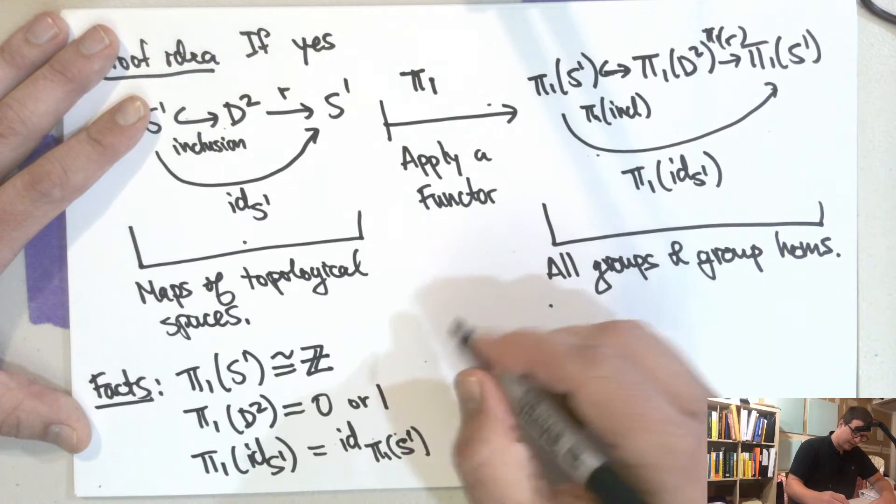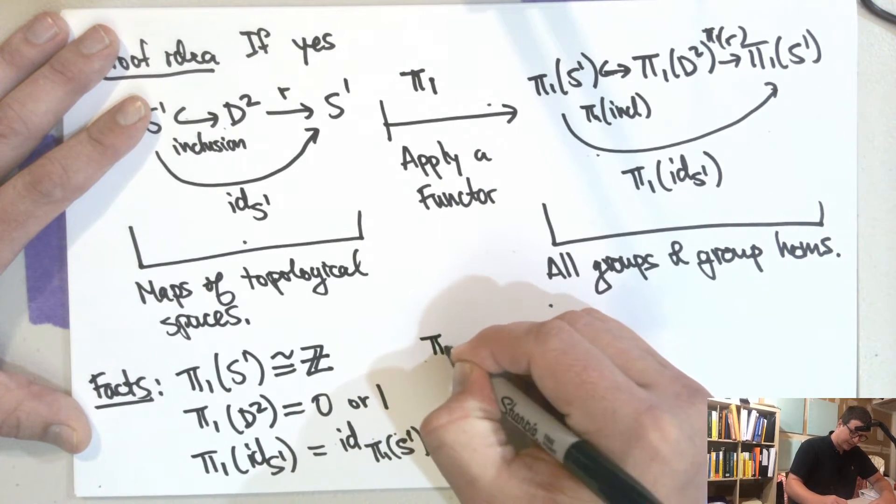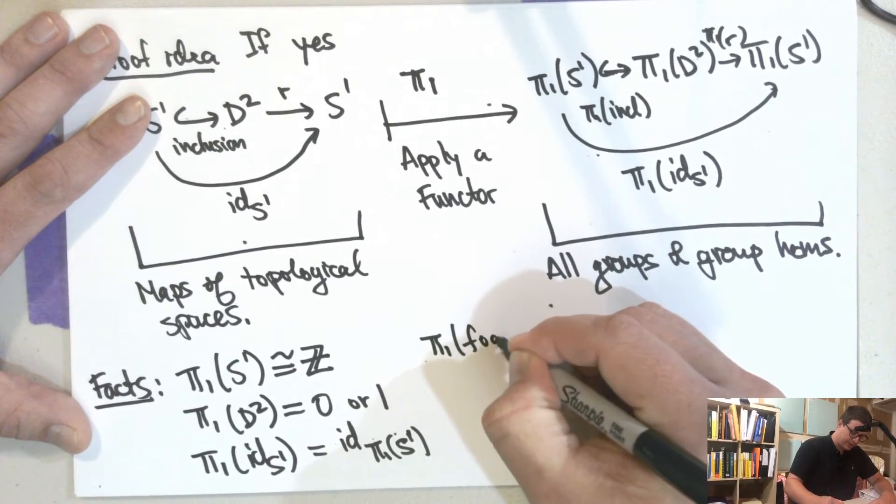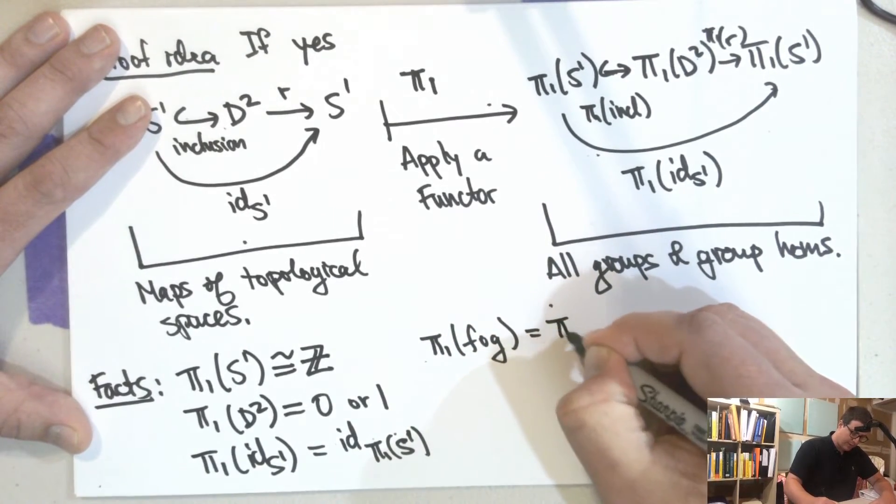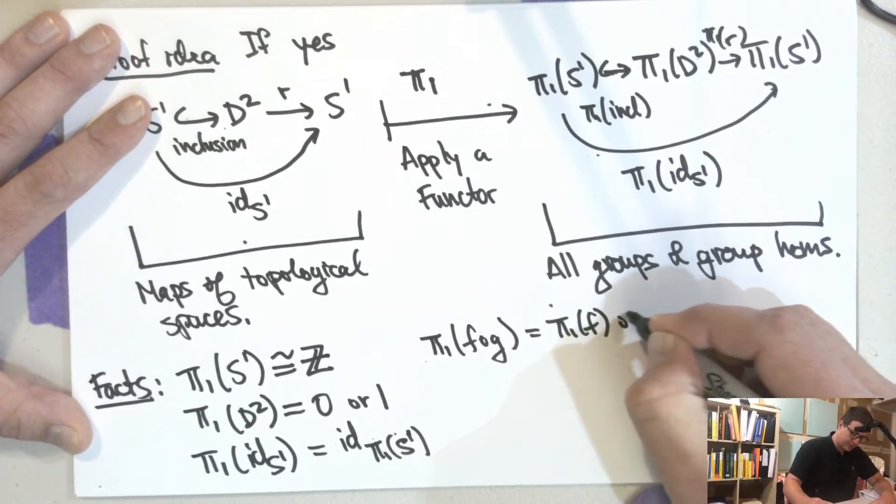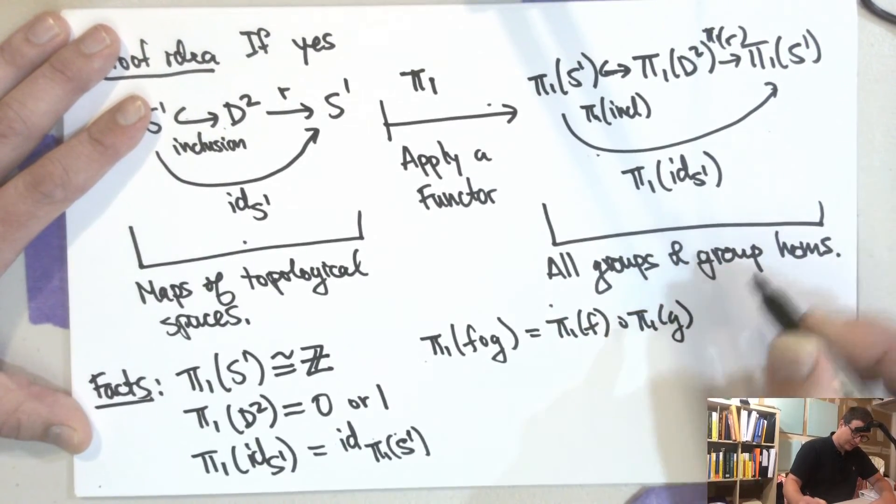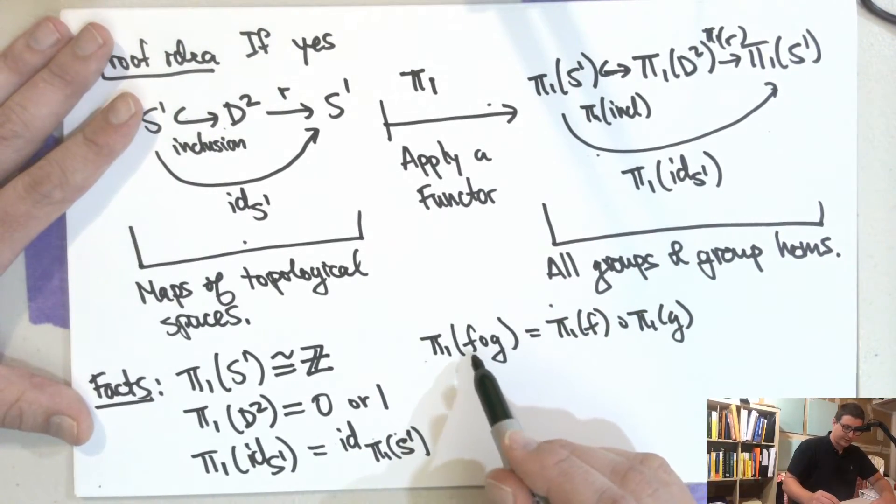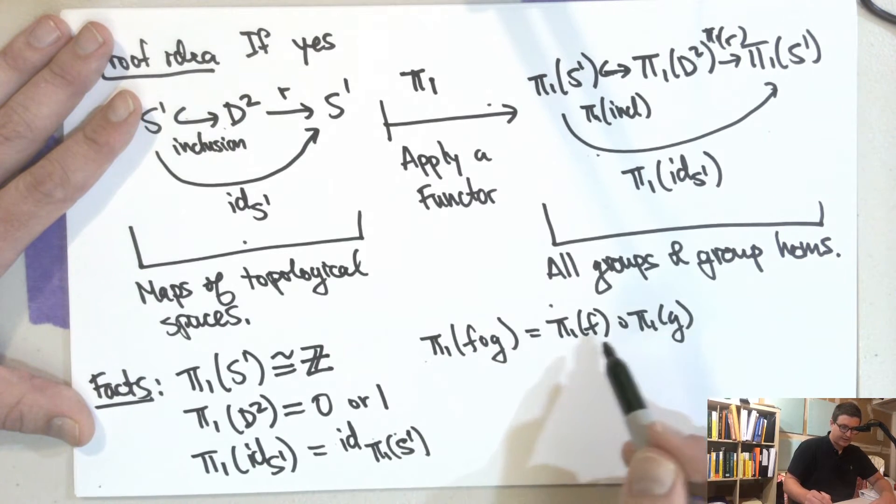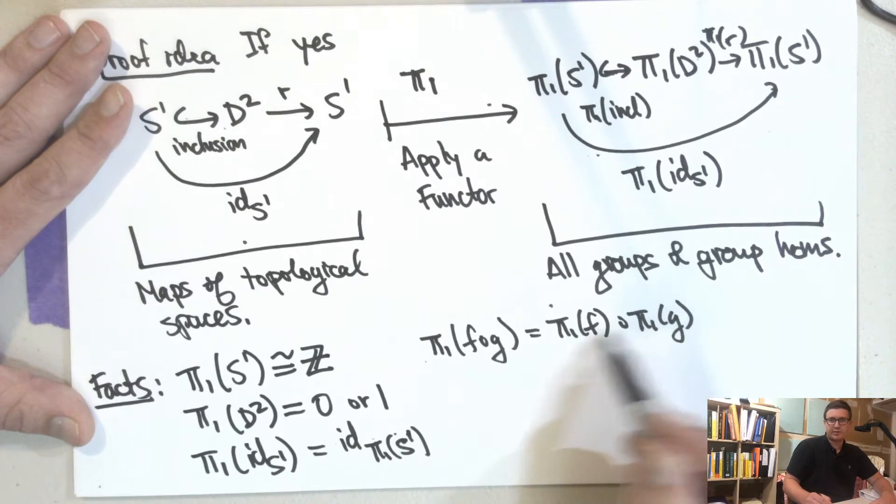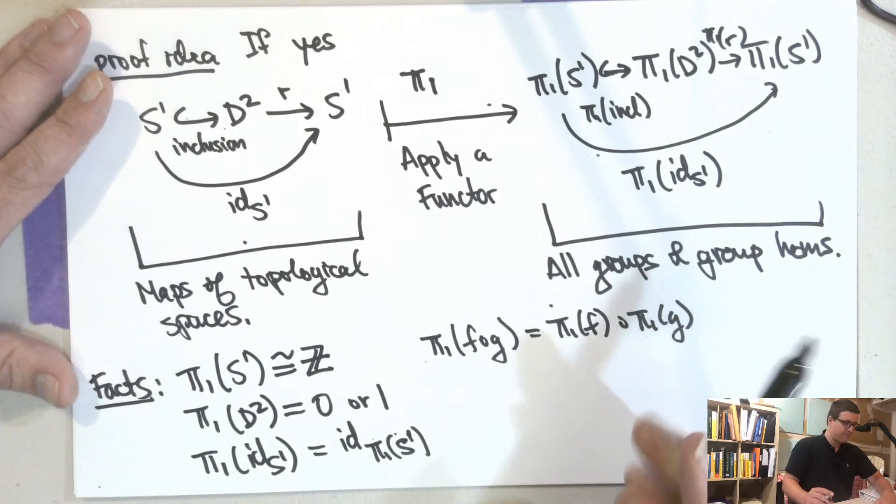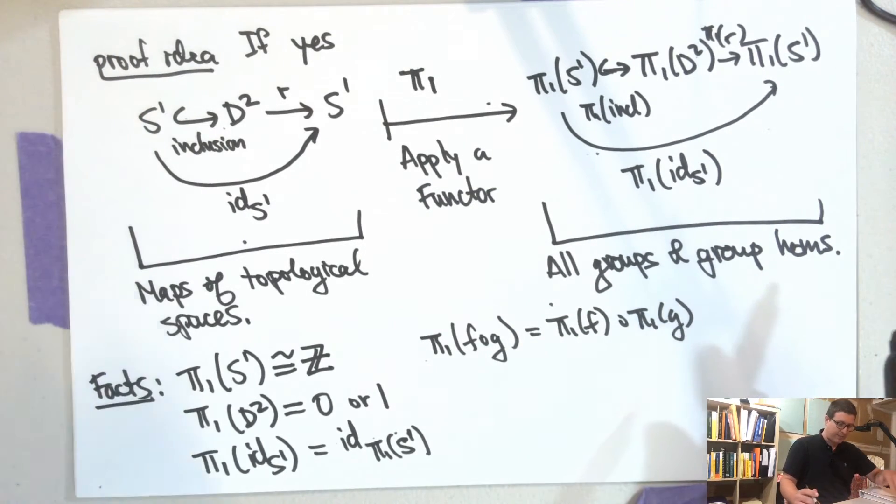So like, if you take the identity map in this category of topological spaces, then it becomes the thing here. And I guess the other thing that we're using is that π₁ of F composed with G is π₁ of F composed with π₁ of G. So for group homomorphisms. So it breaks up continuous maps into composition of group homomorphisms. And so what happens when this happens?